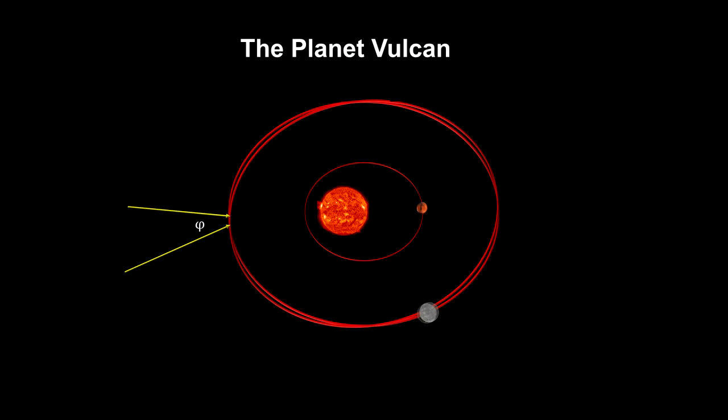The proposed planet between the Sun and Mercury was even given a name: Vulcan. But no such planet was ever observed.